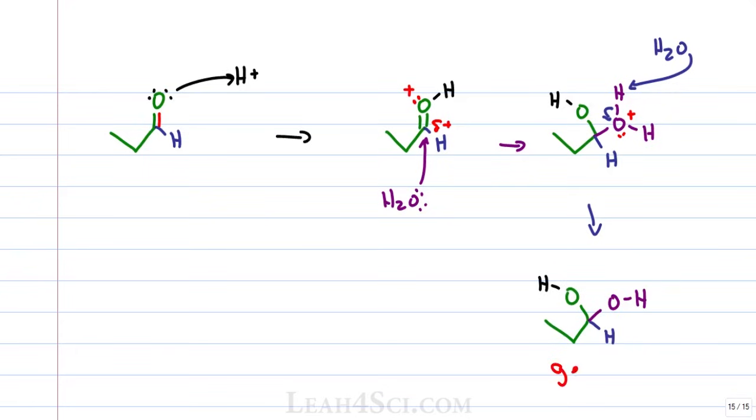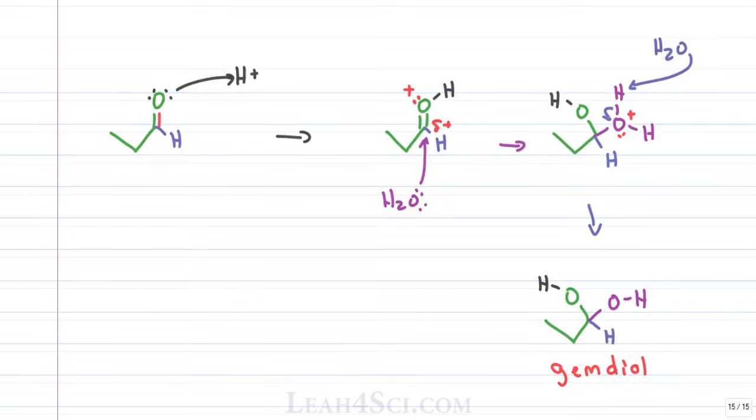This gemdiol intermediate is key to the next step. When you have two alcohols bound to one carbon, it's not very stable, it's reactive and in this case with chromic acid still present in solution, it's going to react with chromic acid.